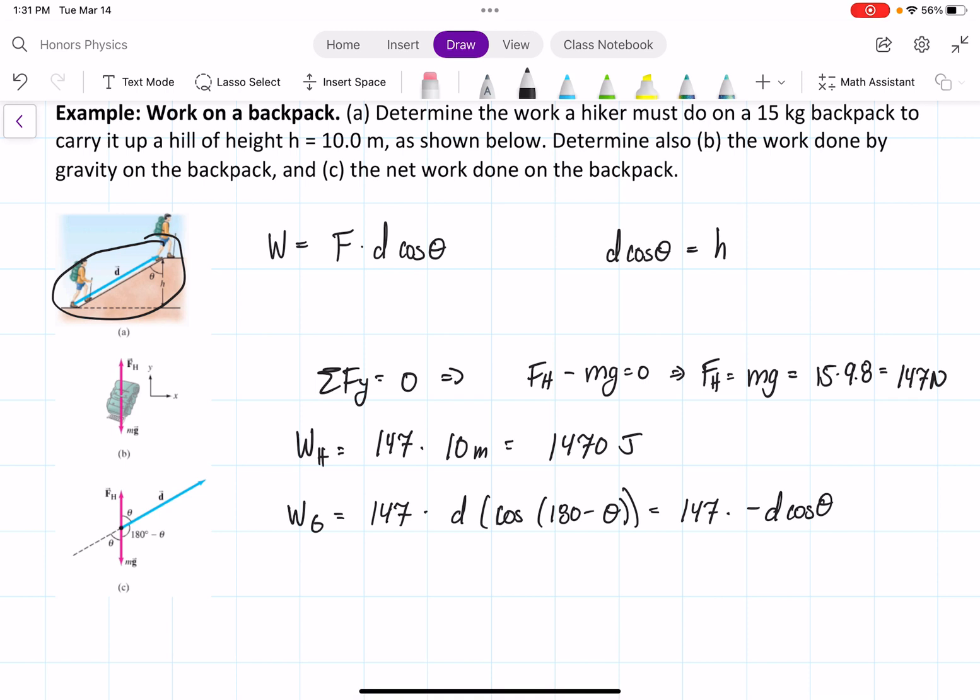which is essentially equal to 147 times negative h, where we know we have times negative 10, which equals negative 1470 joules.